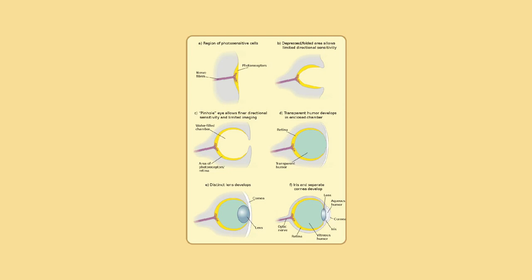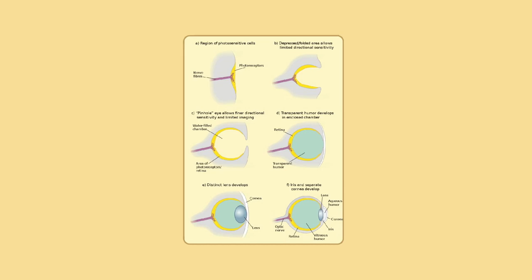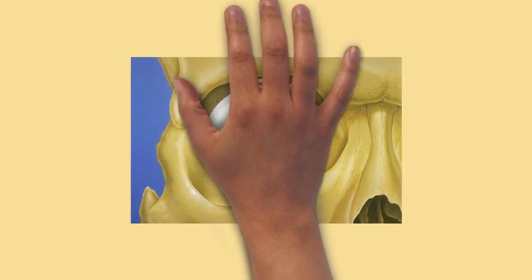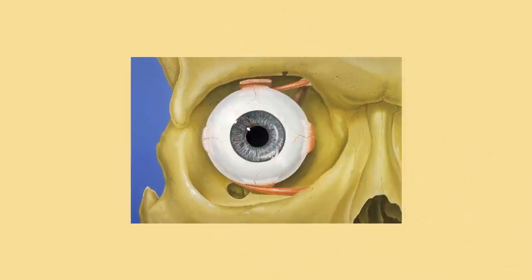Changing the curvature of the lens is carried out by the ciliary muscles surrounding the lens; this process is known as accommodation. Accommodation narrows the inner diameter of the ciliary body, which actually relaxes the fibers of the suspensory ligament attached to the periphery of the lens, and also allows the lens to relax into a more convex (globular) shape. A more convex lens refracts light more strongly, and focuses divergent light rays from near objects onto the retina, allowing closer objects to be brought into better focus.